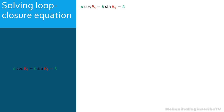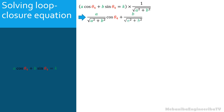Let's carry out the suggested transformation. We need first to divide the equation by the square root of A² + B². Thus the equation writes: (A / √(A² + B²))·cos θ4 + (B / √(A² + B²))·sin θ4 = K / √(A² + B²). We denote A / √(A² + B²) as cos φ and B / √(A² + B²) as sin φ.